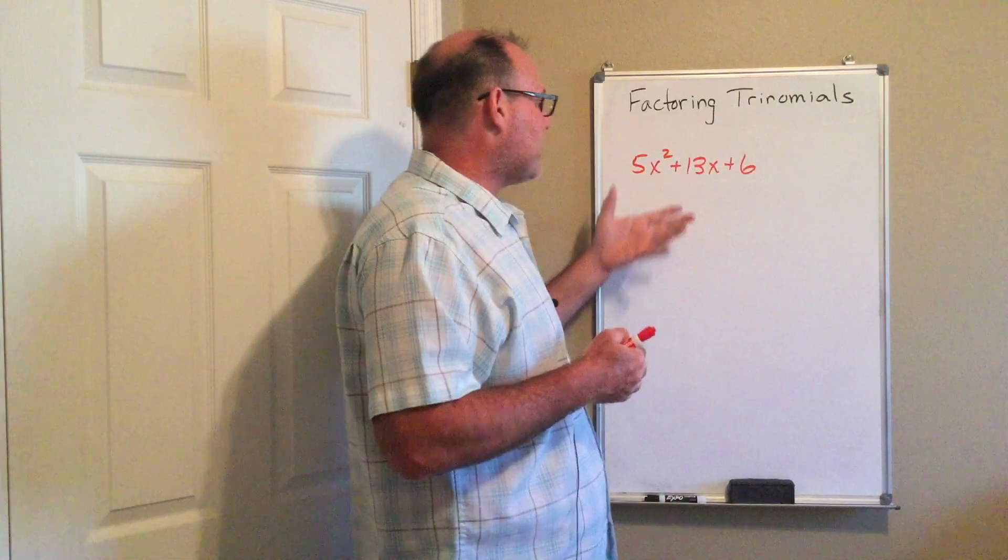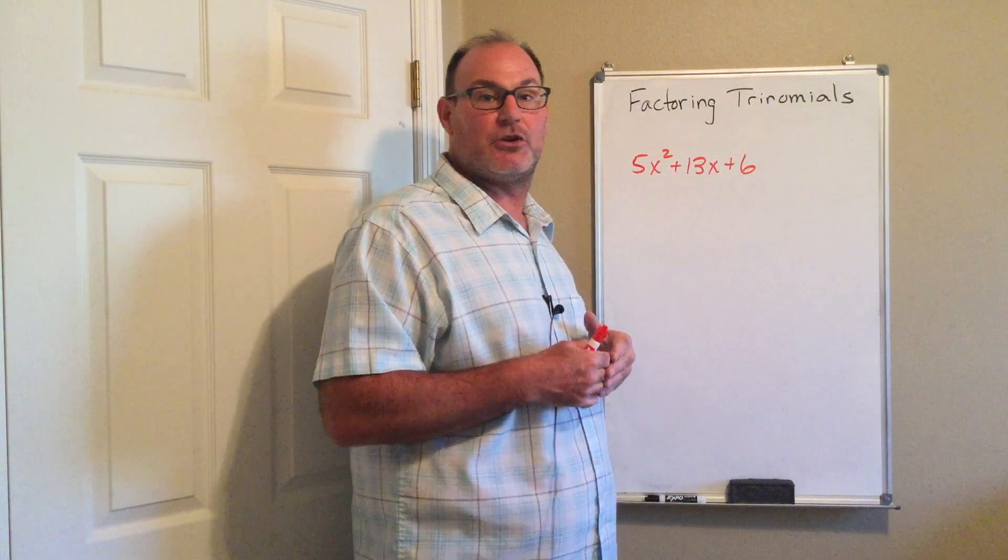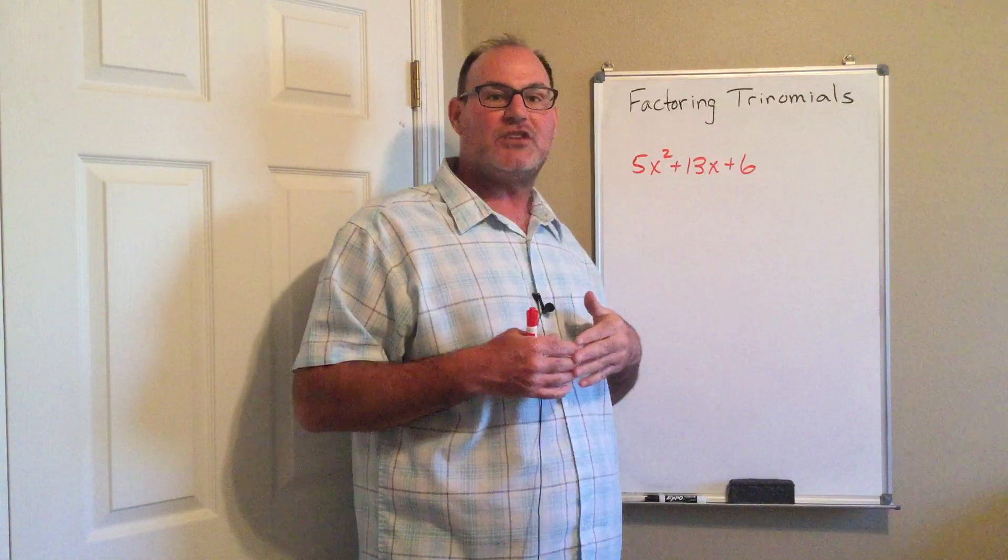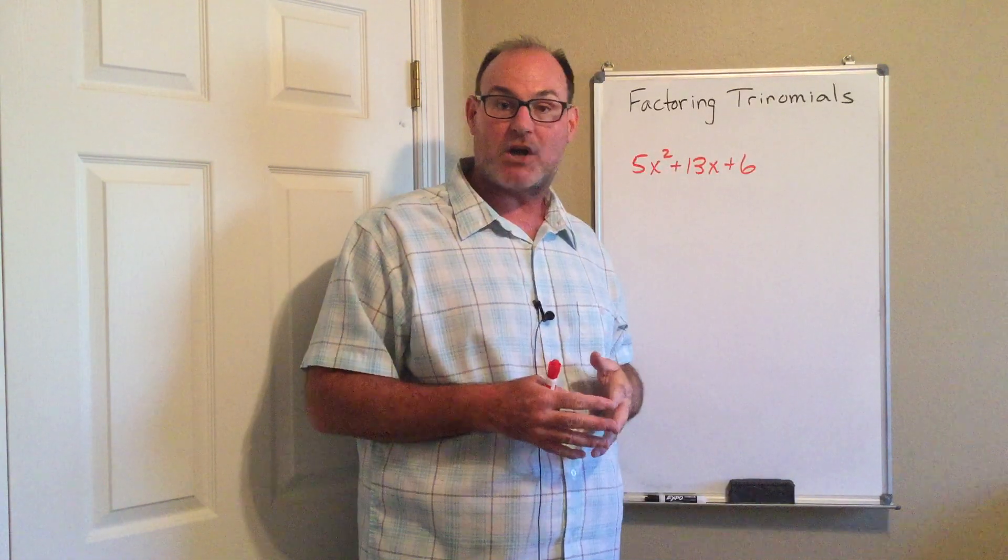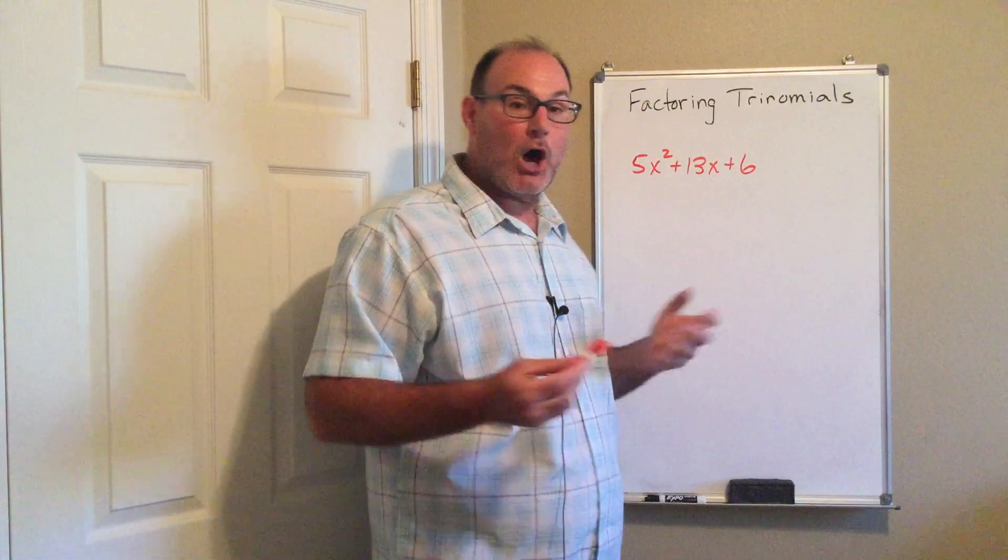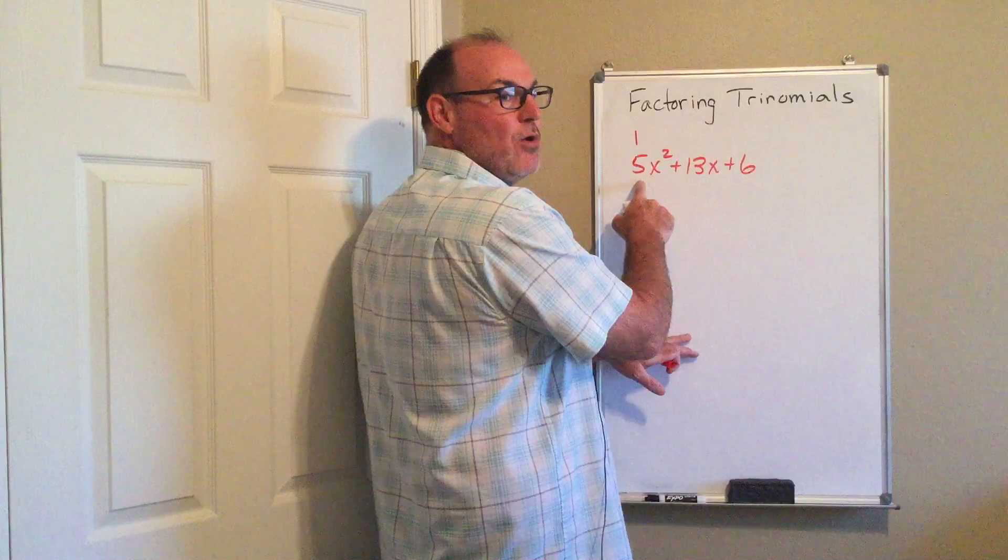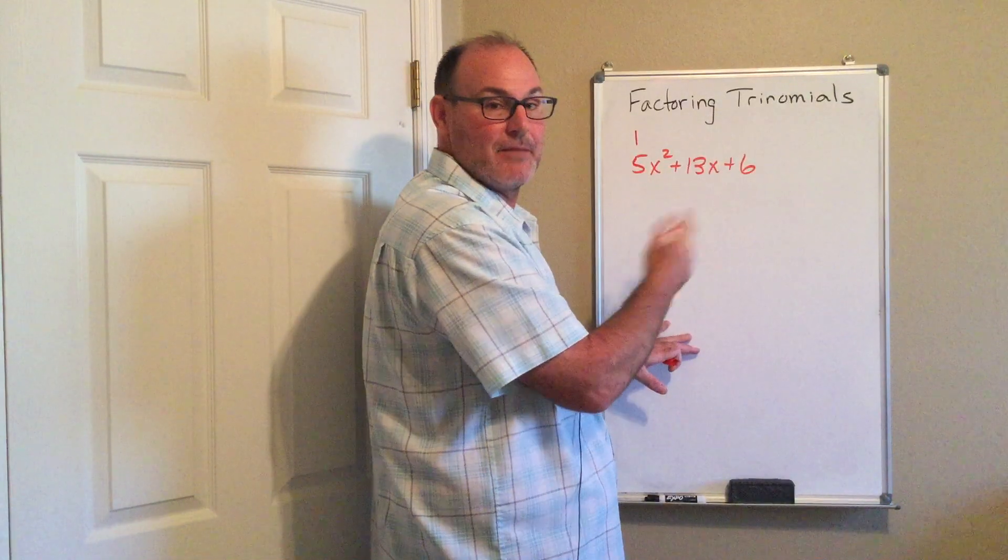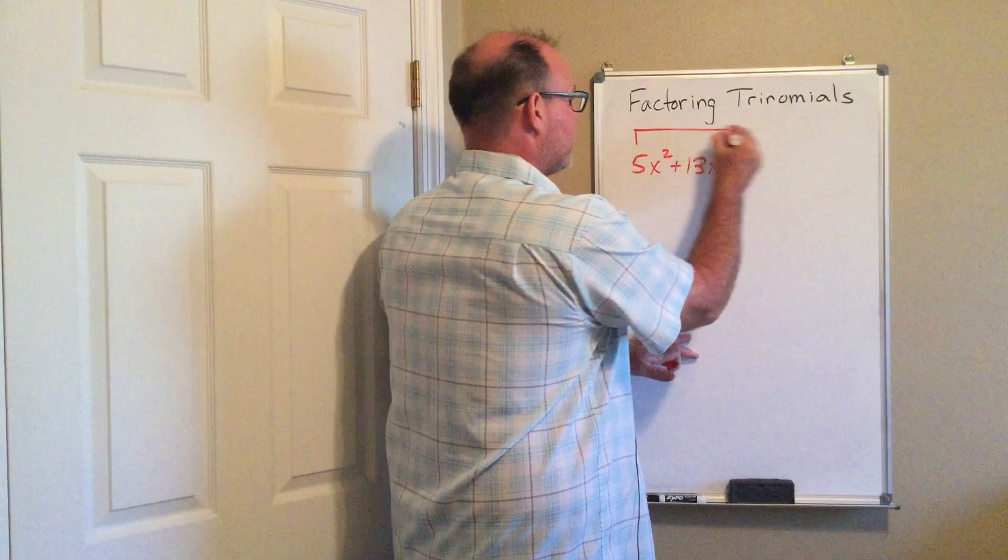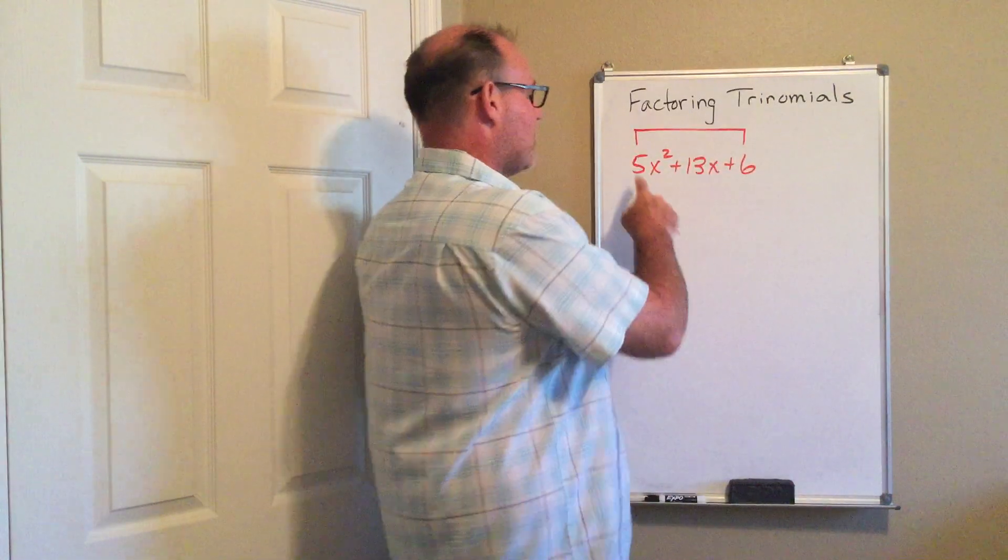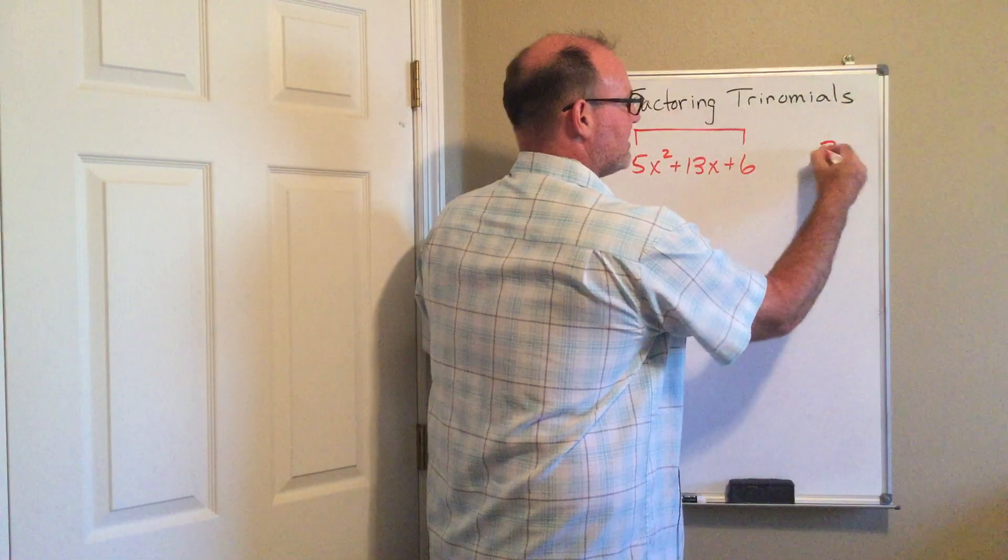What I'm going to show you is a process that is very similar to factoring when you have a 1 in front of the x squared and uses some of the things we've already talked about in this class. We call it the AC method because I'm going to multiply the leading coefficient, which is often denoted by A, with the last number, which is usually called C. So 5 times 6 is the value 30.